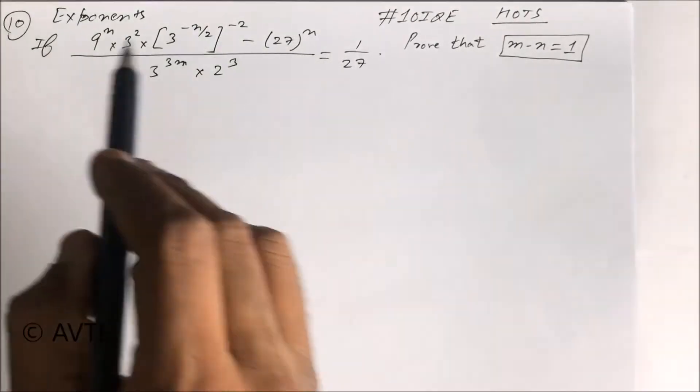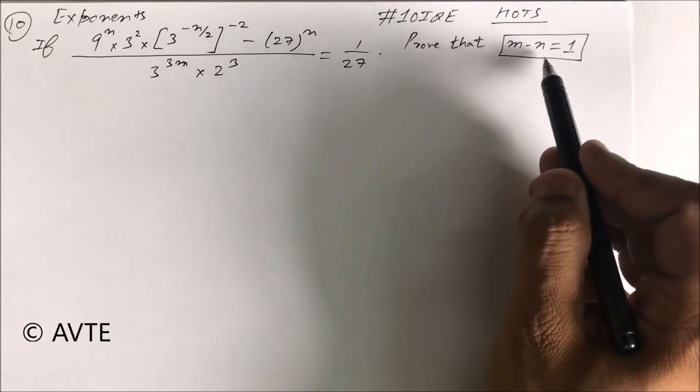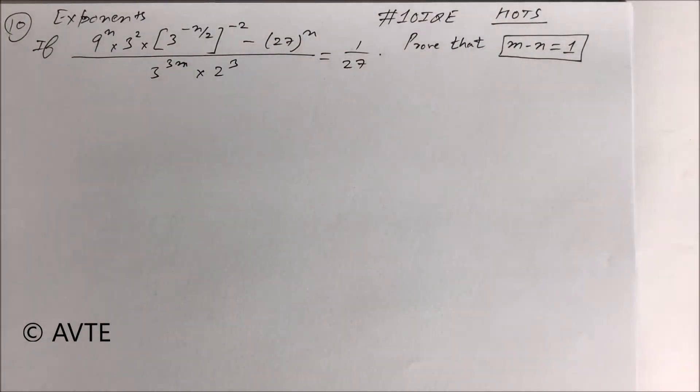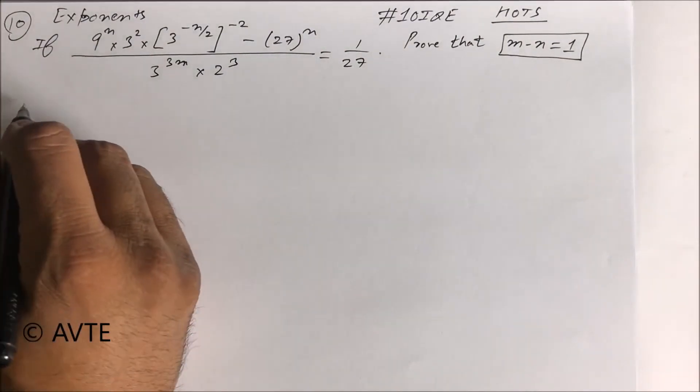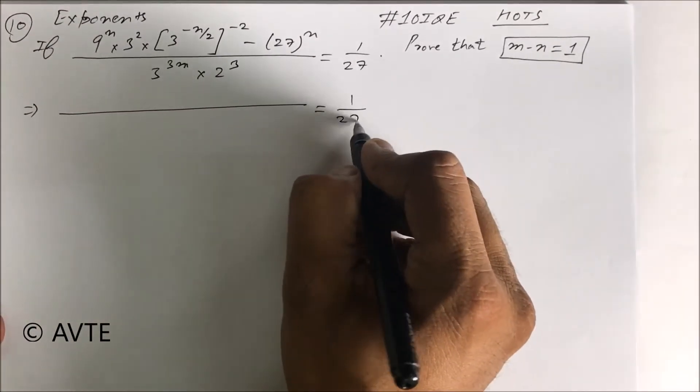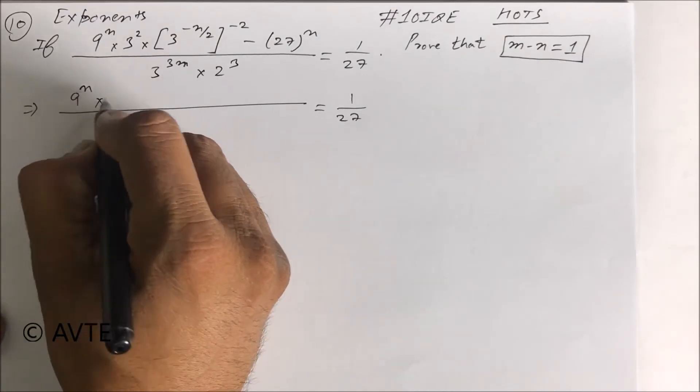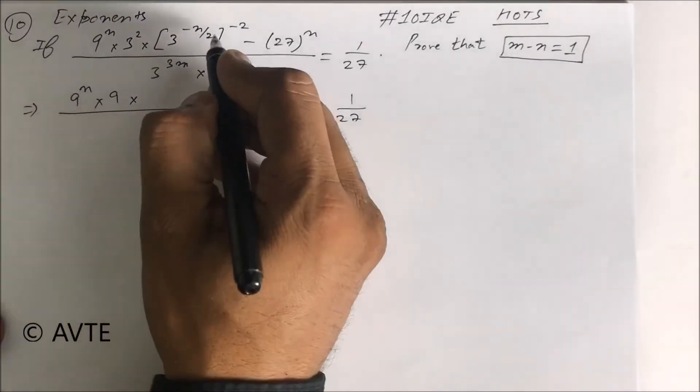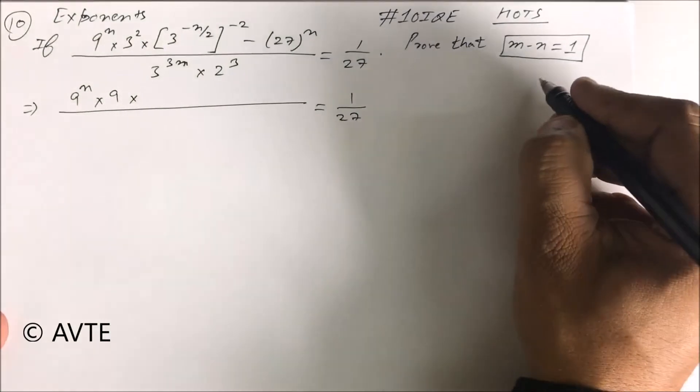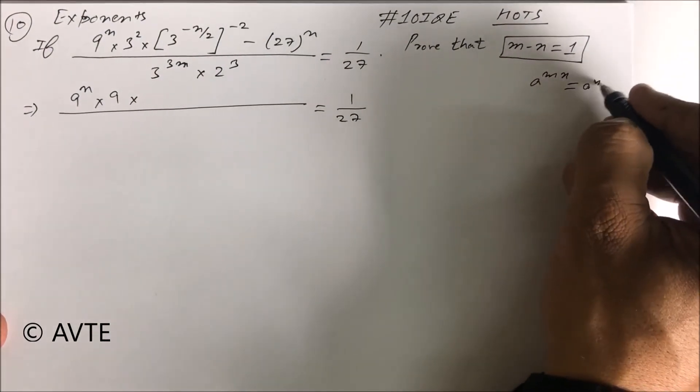If this thing happens, then prove that m minus n is equal to 1. So here we go, this is 1 by 27. This is 9 raised to power n into 9 into, this 2 will be cancelled.